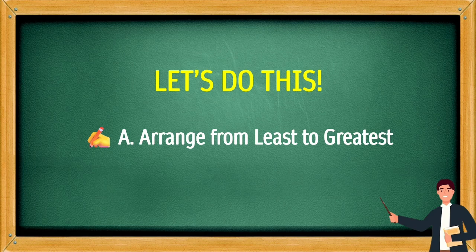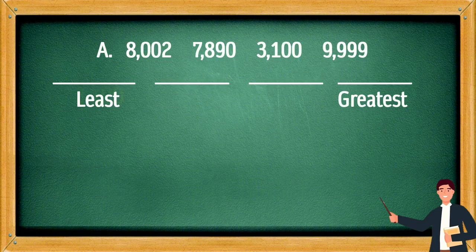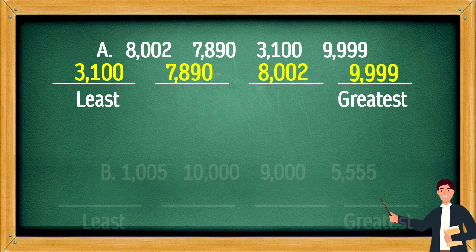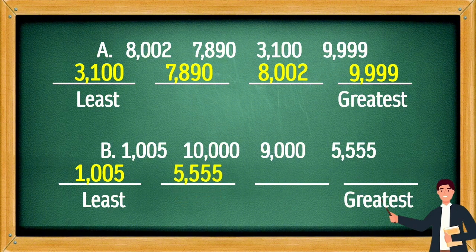Let's do this! Arrange from least to greatest. First set: 3,100, then 7,890, then 8,002, and the greatest is 9,999. Second set: 1,005, then 5,555, then 9,000, and the greatest is 10,000.